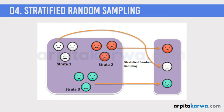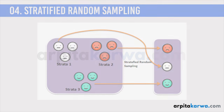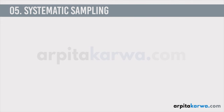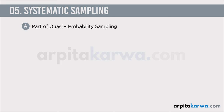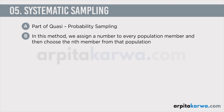Stratified random sampling involves separating the population into subgroups and then taking simple random samples from each of these subgroups. Finally, we move on to systematic sampling, which is the last type we will discuss in this lecture. Systematic sampling is not a proper probability sampling — we mostly address it as quasi-probability sampling, meaning it is a half or partial probability sampling. In systematic sampling, we assign a number to every population member and then choose every nth number from that population.